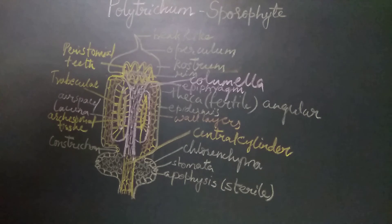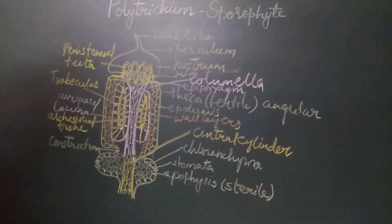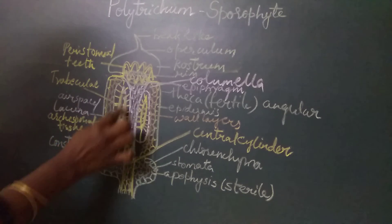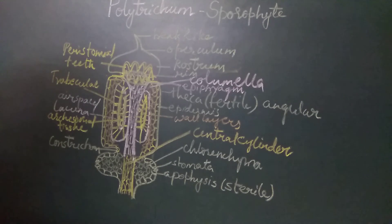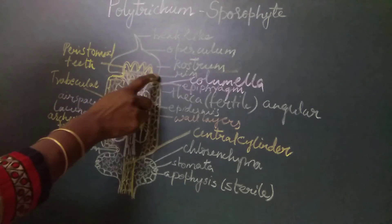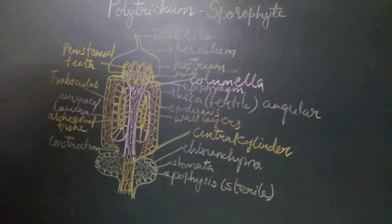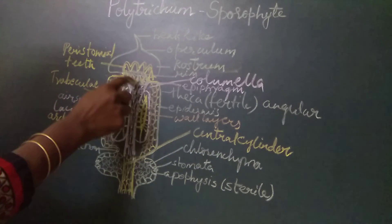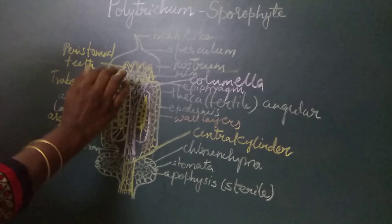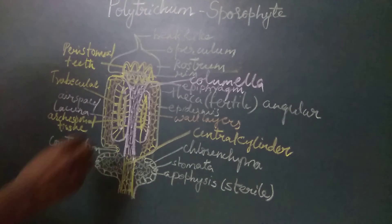As the capsule matures and the spore mother cells undergo reduction division, the spores are released. At maturity, the capsule dehisces. In the process of dehiscence, the opercular region gets separated from the rim cells. The epiphragm, which was closing the mouth of the theca, gets exposed to the external environment.